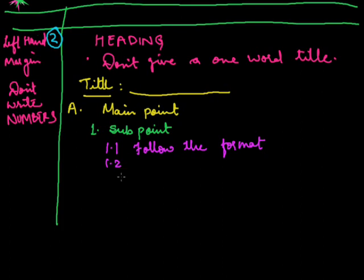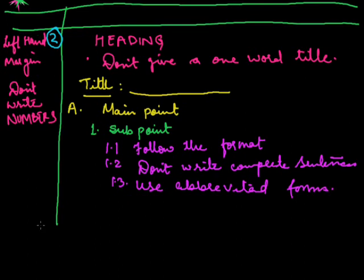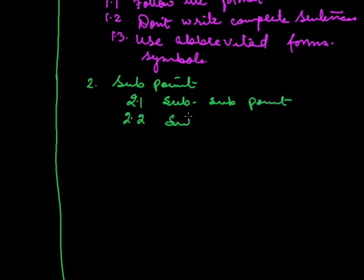Point number 2: after reading the paragraph, find the sub-sub point. Don't write complete sentences — use abbreviated forms and symbols where required. Then sub-point number 2 with 2.1 as sub-sub point, 2.2 as sub-sub point, and 2.3 as sub-sub point.